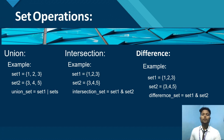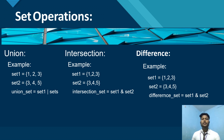Additional properties of sets include: first, union; second, intersection; and third, difference.